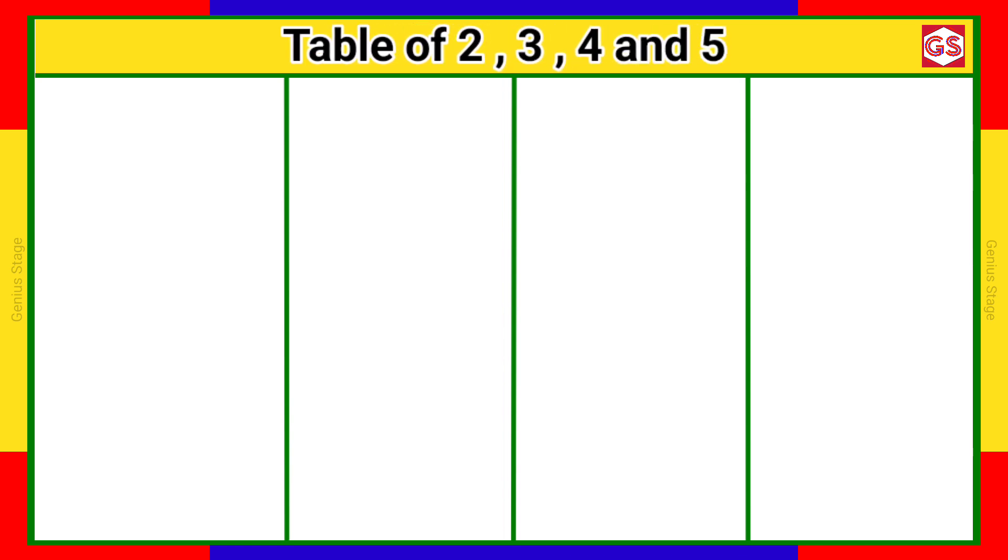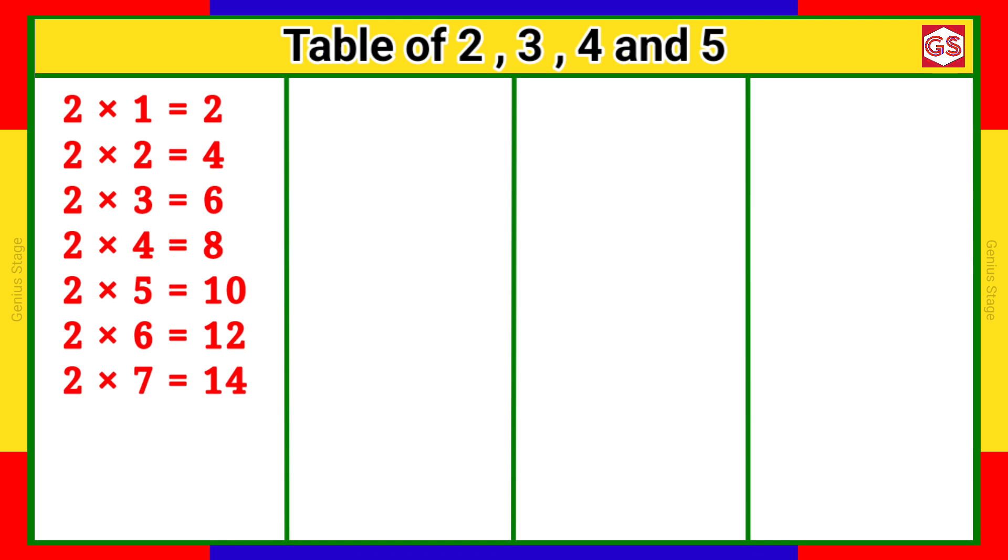2 1s are 2, 2 2s are 4, 2 3s are 6, 2 4s are 8, 2 5s are 10, 2 6s are 12, 2 7s are 14, 2 8s are 16, 2 9s are 18, 2 10s are 20.